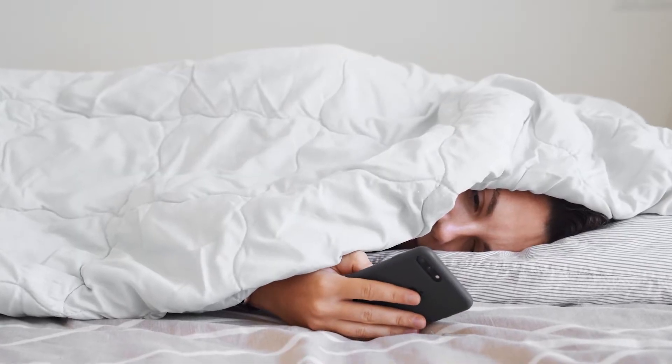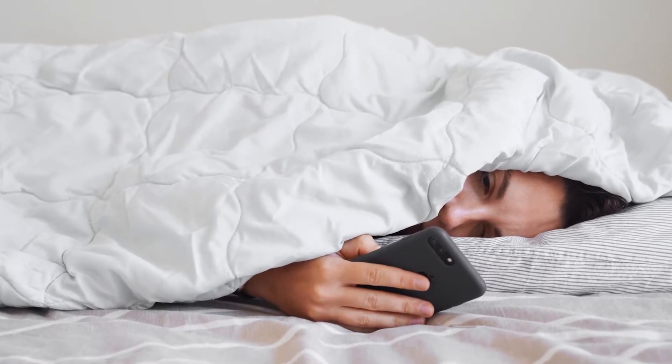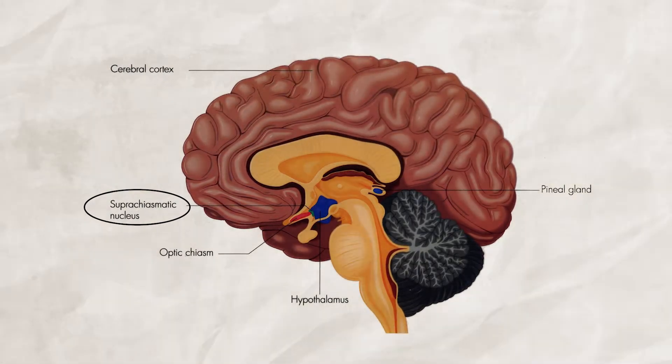Have you ever heard it's bad to watch TV right before bed or stare at your phone when you're trying to sleep? That's because light from your room, phone, or TV can affect your circadian clock. Light-sensitive retinal proteins trigger the brain's suprachiasmatic nucleus to tell the pineal gland to decrease melatonin in the morning and increase it in the evening. Staring at your phone or TV can disrupt your internal clock and make it more difficult to fall asleep.